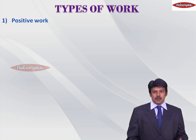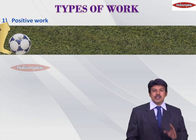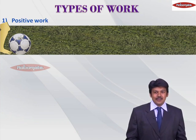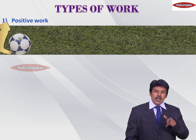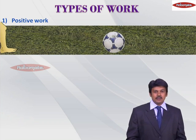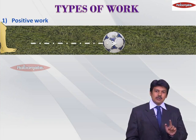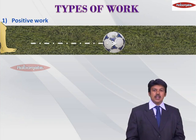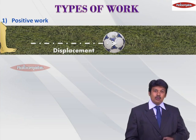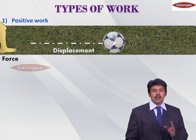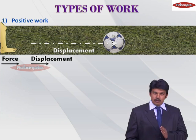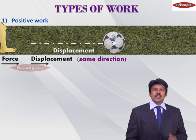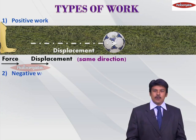Having understood work, let us look at the different types of work. The first type is called positive work. Consider football — when we kick the football, we apply force with our leg, and the football moves in the forward direction. The football covers some distance — that is displacement. We applied force in one direction and displacement also occurred in the same direction. Whenever force and displacement are in the same direction, it is called positive work.